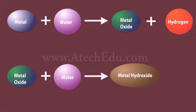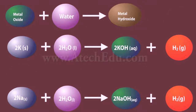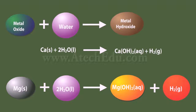Some metals react with water to give metal oxides. Some react with cold water, some with hot water, and some with steam. Some metals do not react with water at all. Metal oxides that are soluble in water dissolve in it to further form metal hydroxide. Metals like potassium and sodium react violently with cold water — a large amount of heat is produced and the evolved hydrogen gas catches fire. Calcium does not react violently with water; the heat evolved is not sufficient for hydrogen gas to catch fire.